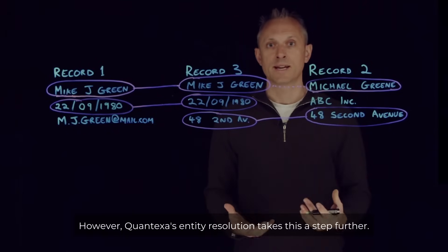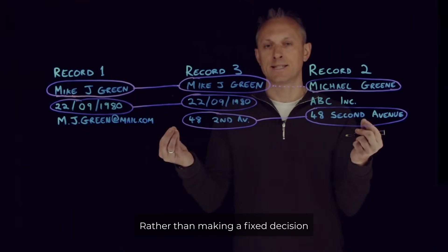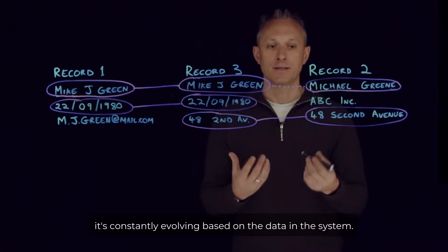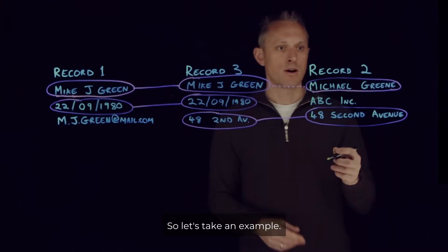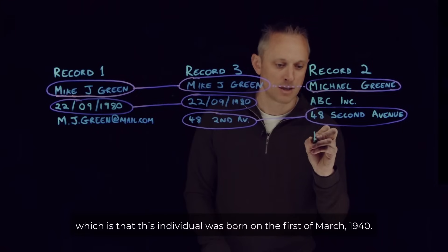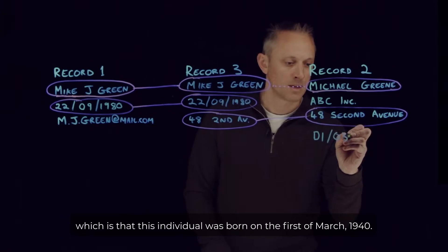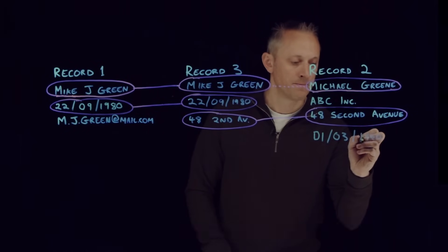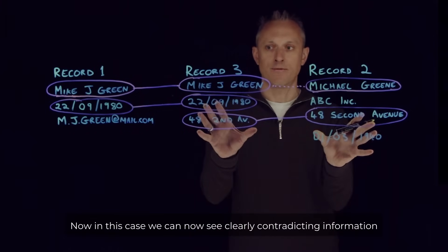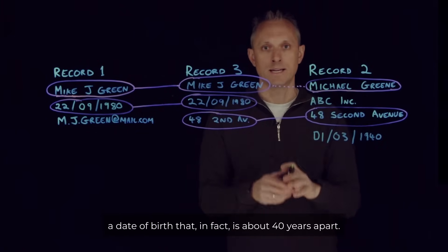However, Quantexa's Entity Resolution takes this a step further. Rather than making a fixed decision about these three records, it's constantly evolving based on the data in the system. Imagine Record 2 is updated and a brand new piece of information arrives — that this individual was born on the 1st of March 1940. We can now see clearly contradicting information between Record 3 and Record 2: a date of birth that is in fact about 40 years apart.